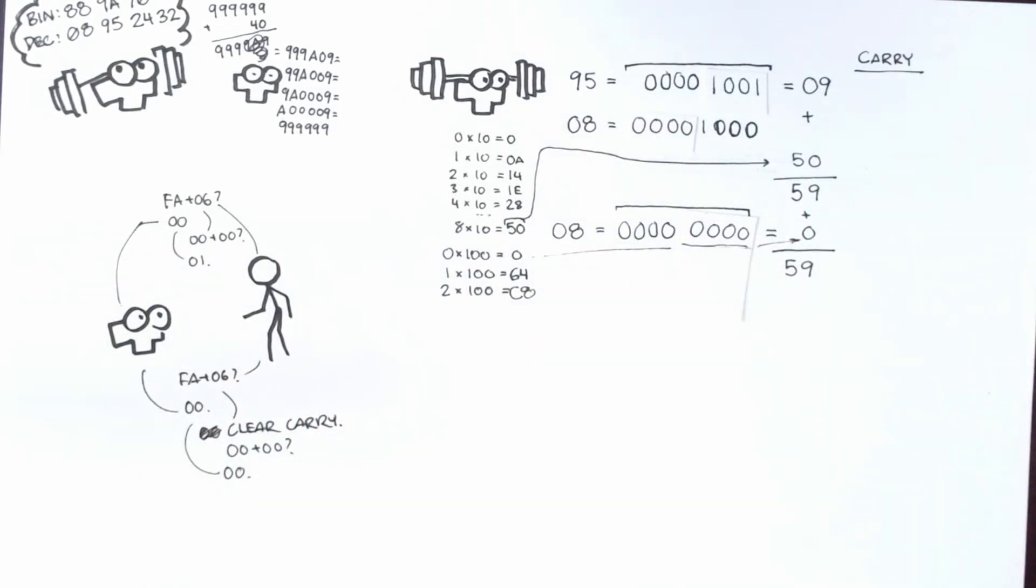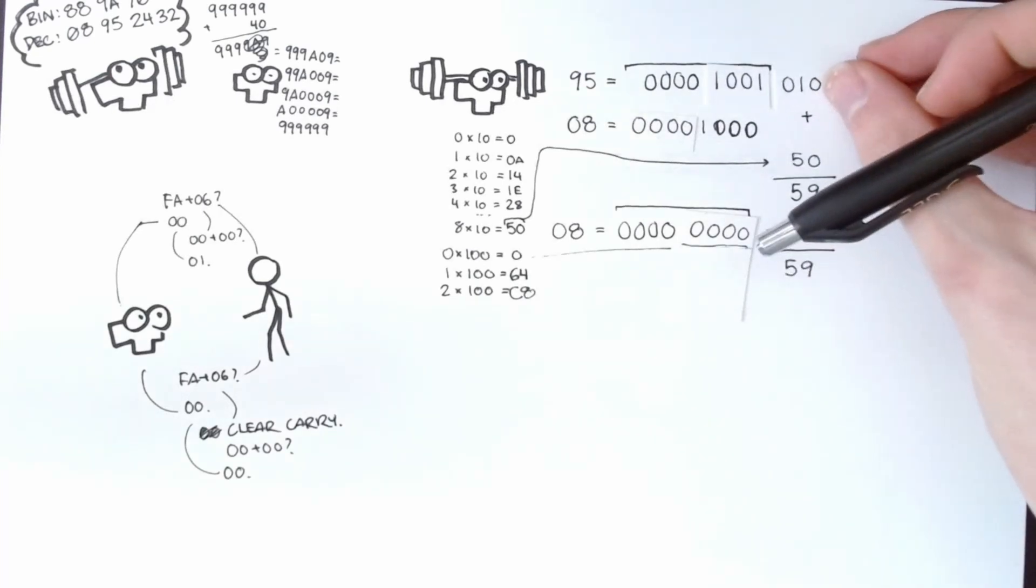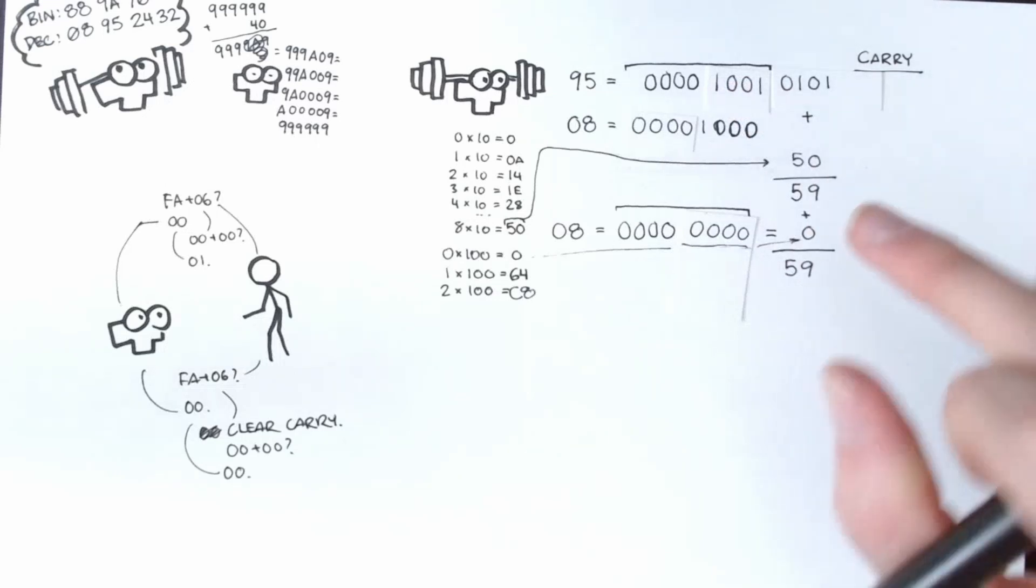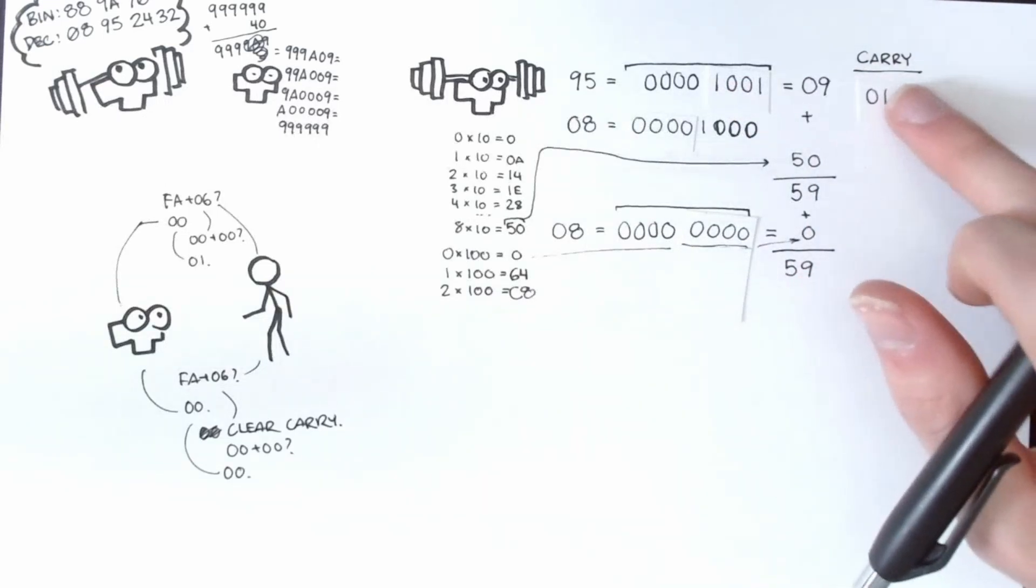For instance, in that FA plus 6 calculation we did earlier, the carry would be set since we overflowed to 0. Importantly, that carry flag is not only set by additions, but by other operations, one of those being the bit shift right command. Whatever bit was shifted out of the number will be put into the carry.